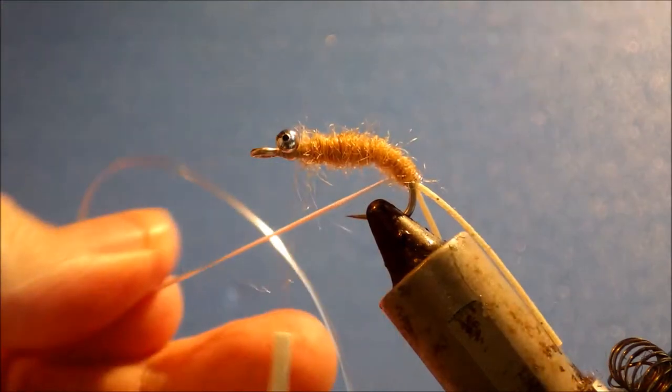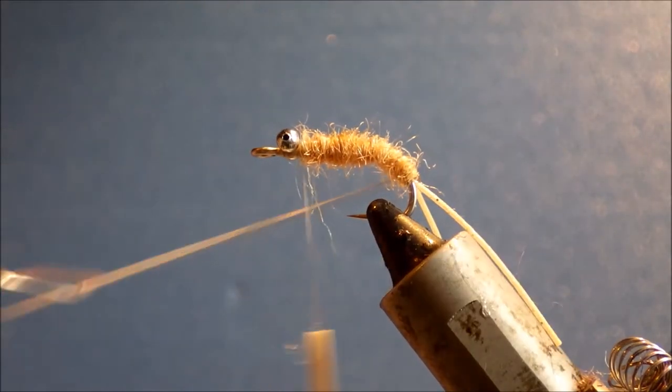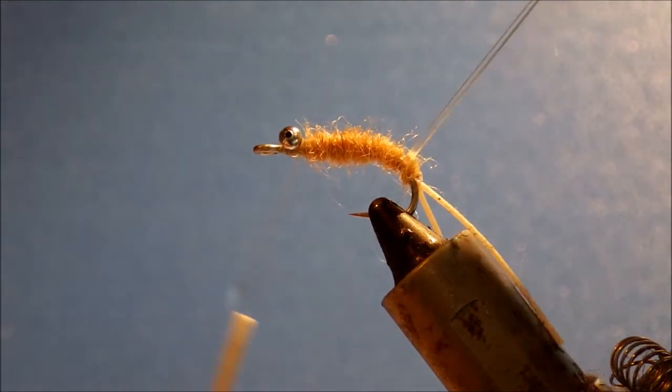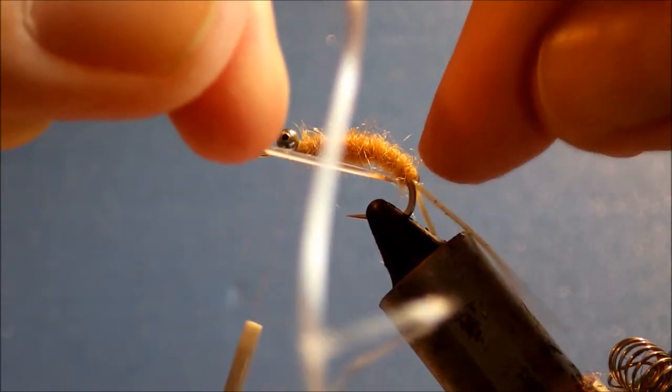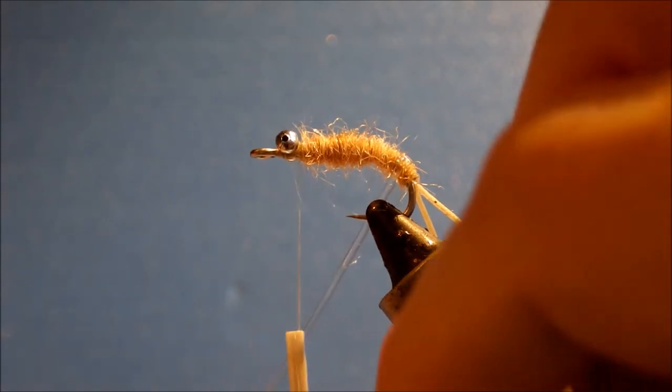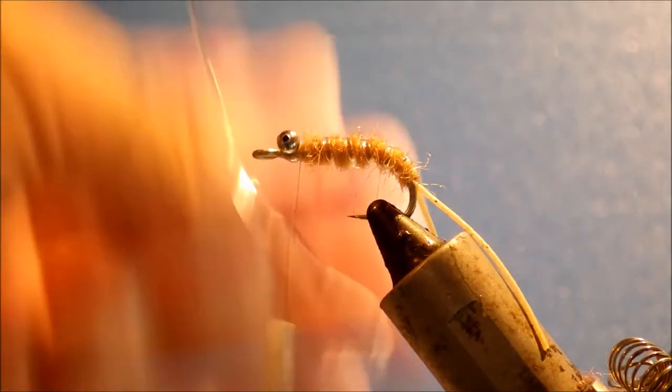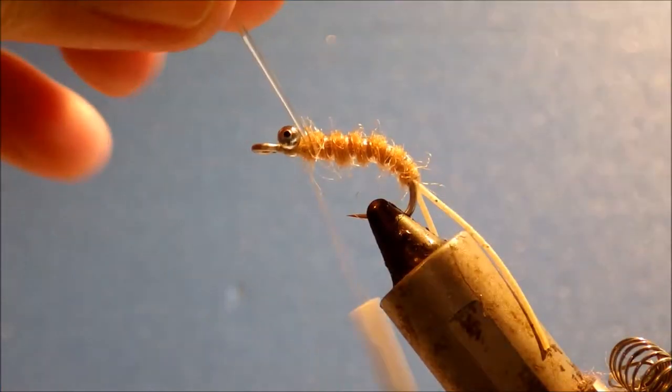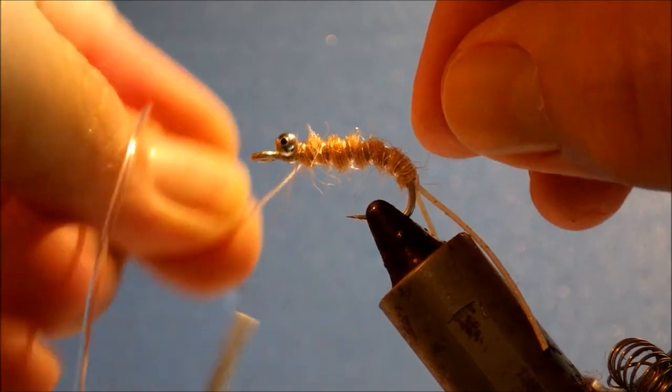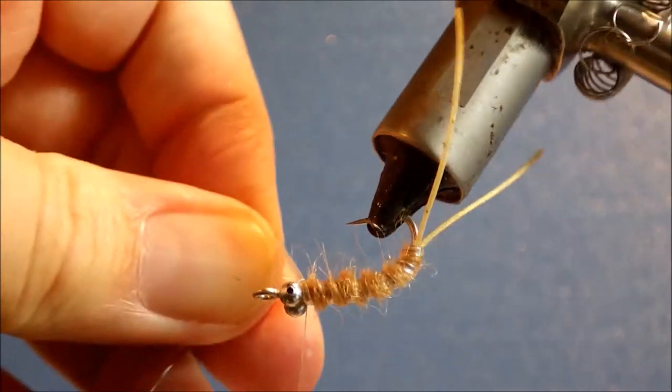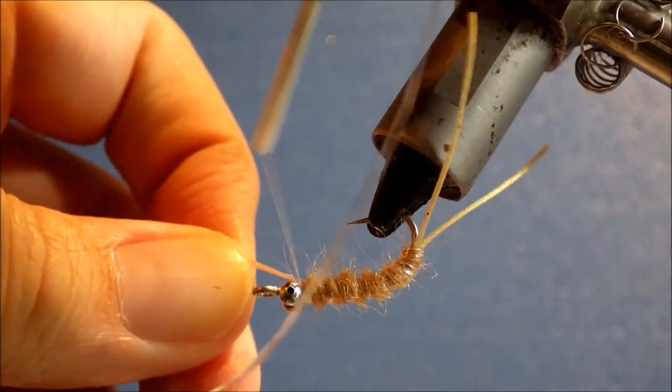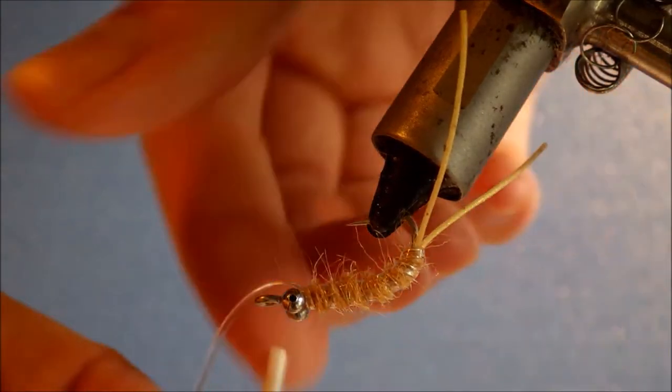And then take the rib forward in open turns. And then cross your thread and tie it off. I like to tie it in the underside so that you've got a bit of space. You're not fighting the eyes.